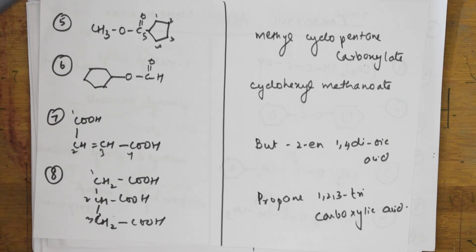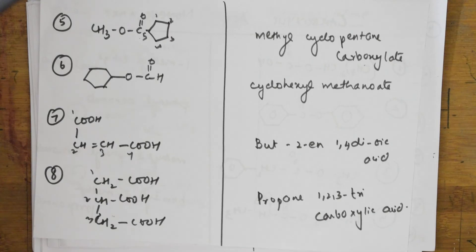That is the nomenclature of carboxylic acids, students. I'll meet you again with the nomenclature of amines, cyanides, and isocyanides in my next video. Thank you for watching — stay happy.